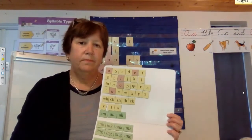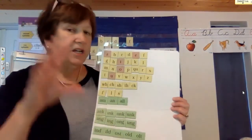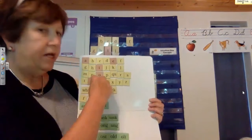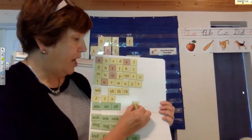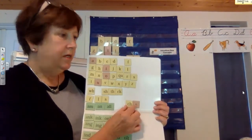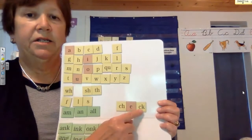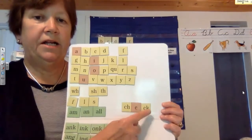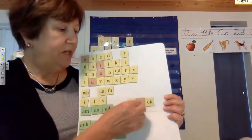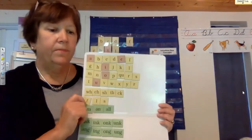You ready for another one? Everybody say the word check. Let's tap it. I hear C-K. Go ahead and pull down what you would spell for check. I hear a short E. So that means I'm going to have to add C-K at the end. Check. I need a C-K because it's right after a short vowel. Good job. Let's spell that back. C-H-E-C-K.